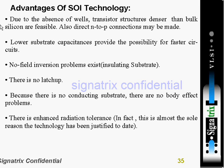The substrate is connected to VDD or ground. Lower substrate capacitance provides the possibility for faster circuits — because capacitance at the substrate is reduced, your circuit operates much faster. There are many factors contributing to capacitance; between the gate and the channel there is a capacitance, but here they are specifically talking about substrate capacitance.